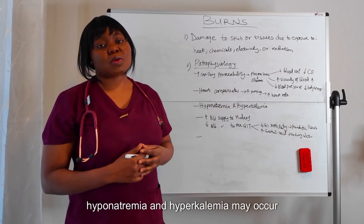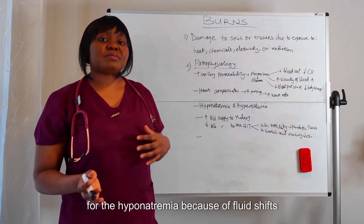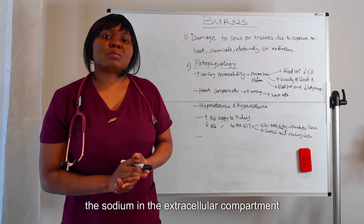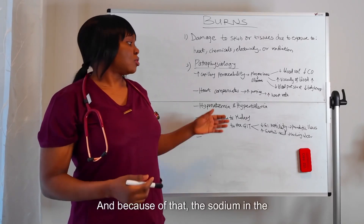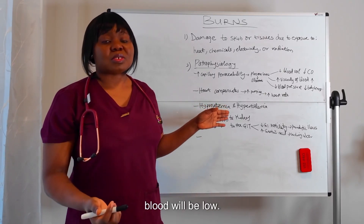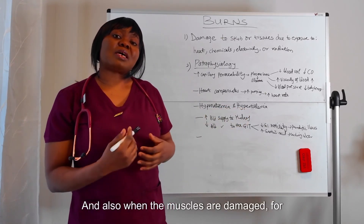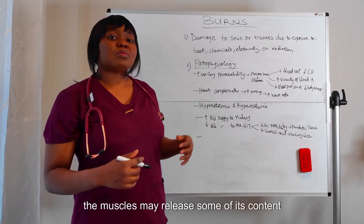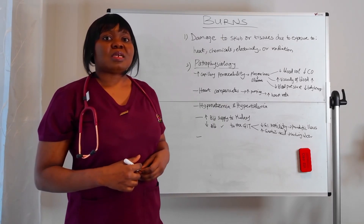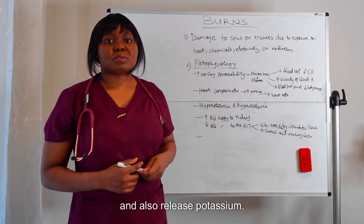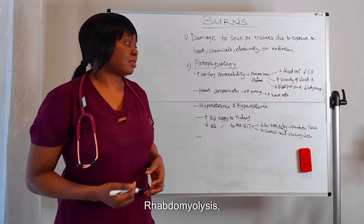Also, hyponatremia and hyperkalemia may occur. For hyponatremia, because of fluid shifts, the sodium in the extracellular compartment becomes diluted, and because of that, the sodium in the blood will be low — that's hyponatremia. And also, when the muscles are damaged, the muscles may release some of their contents, like myoglobin and potassium. This process, when the muscles begin to break down due to injuries, is called rhabdomyolysis. When it happens, potassium in the blood becomes high.